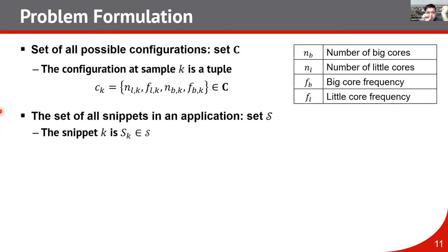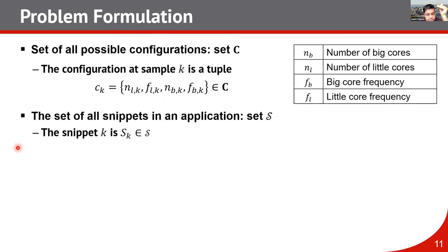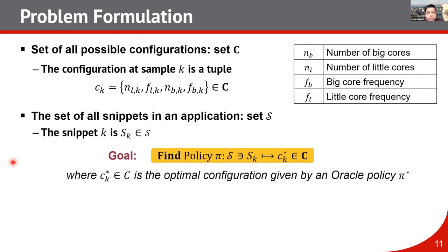With this large amount of data we construct the oracle policy. The set of possible configurations is denoted by set C. The configuration at sample k is a tuple consisting of: number of little cores, frequency of little cores, number of big cores, and frequency of big cores. The set of all snippets in an application is set S, and the goal of the oracle policy is to find the optimal configuration for each snippet.